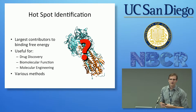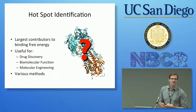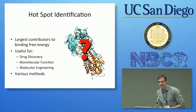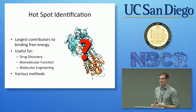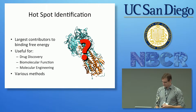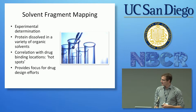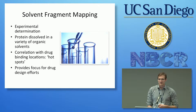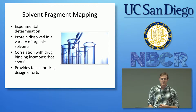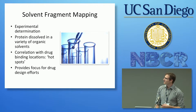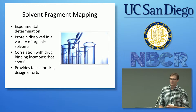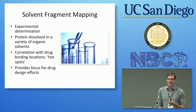Finding these hot spots has all sorts of useful possibilities — drug discovery, finding allosteric sites, that sort of thing. Any time you have a biomolecule interacting with something else, a hot spot may be involved. There are various methods, both experimental and computational, to find these hot spots.